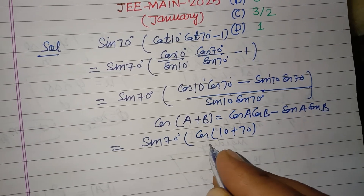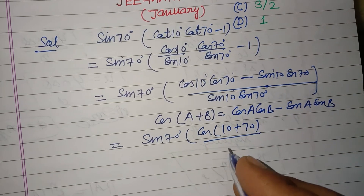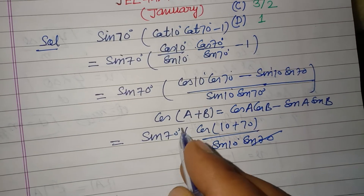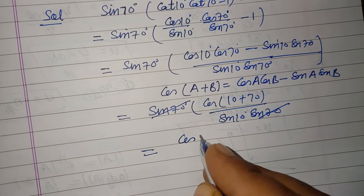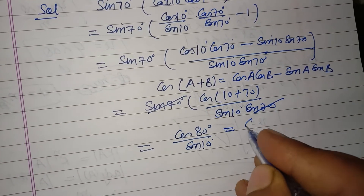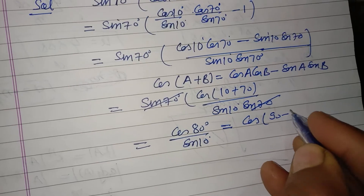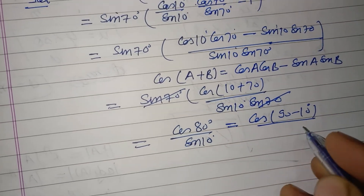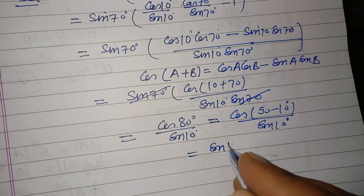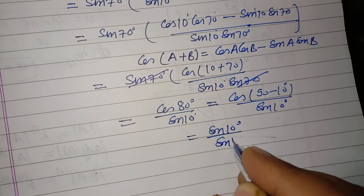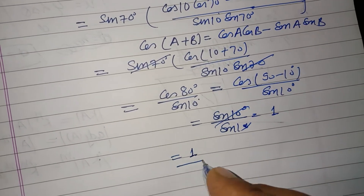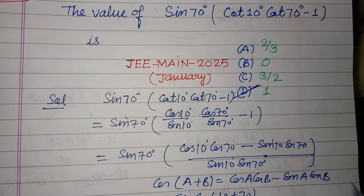So we have cos(10 plus 70), which is cos 80, over sin 10. The sin 70 in the numerator and denominator cancel. Now cos 80 can be written as cos(90 minus 10), and cos(90 minus theta) equals sin theta, so this becomes sin 10 over sin 10, which equals 1. Therefore, 1 is the correct answer, found in option D.